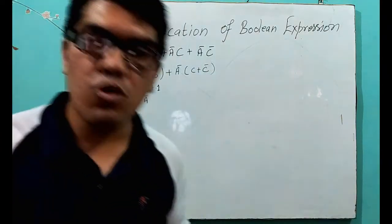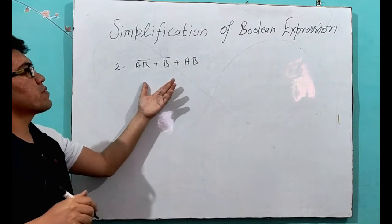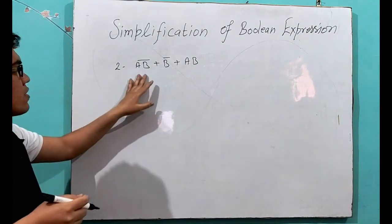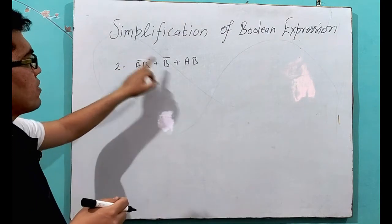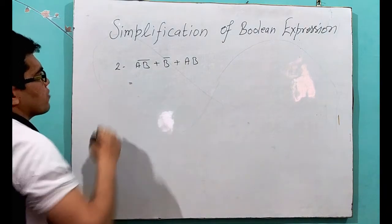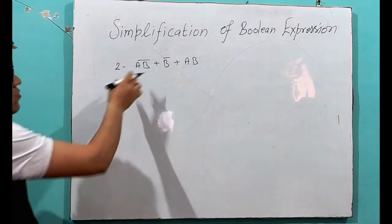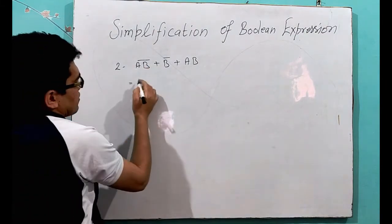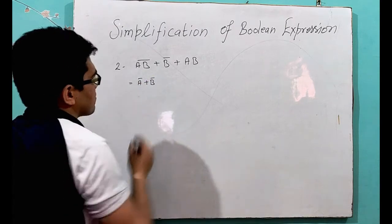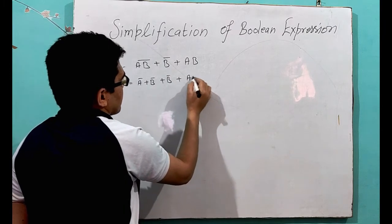Now let us take one more example. This is the second example which we have to minimize or simplify: (AB)̄ plus B̄ plus AB. First, we have to apply De Morgan's law here. So when you apply De Morgan's law, it will be Ā plus B̄, plus B̄ which is already here, plus AB.